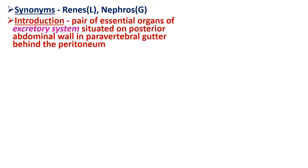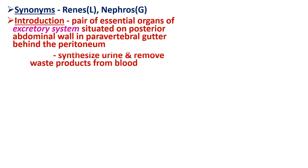Coming to the introduction, kidneys are the pair of essential organs of the excretory system situated on the posterior abdominal wall in the paravertebral gutter behind the peritoneum. Kidneys synthesize urine and remove waste products from the blood.